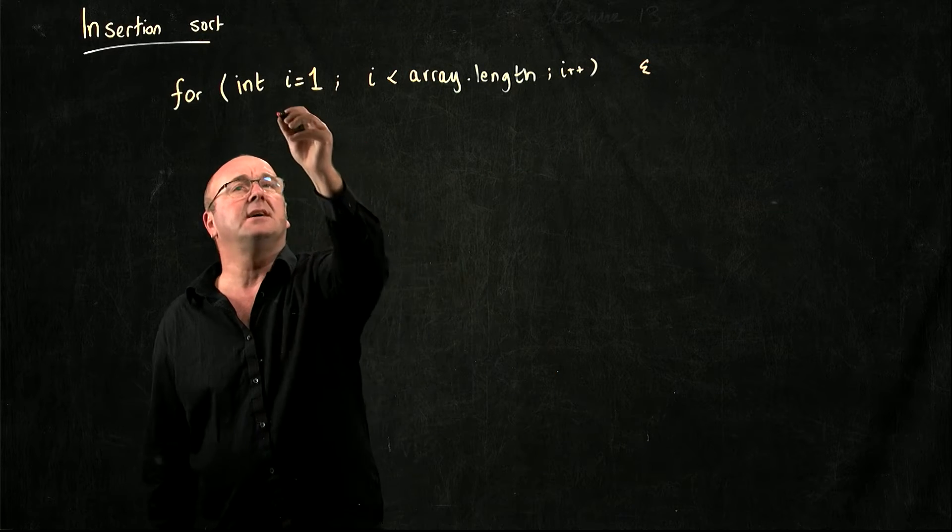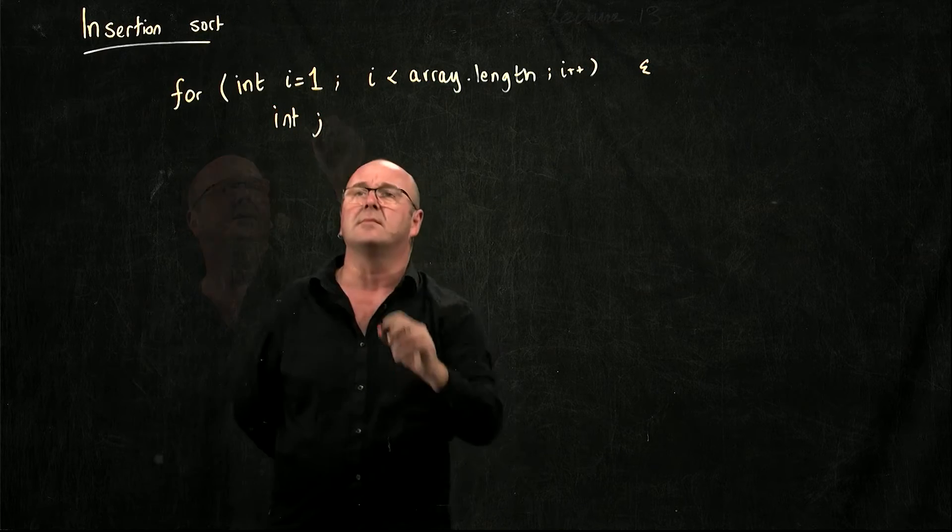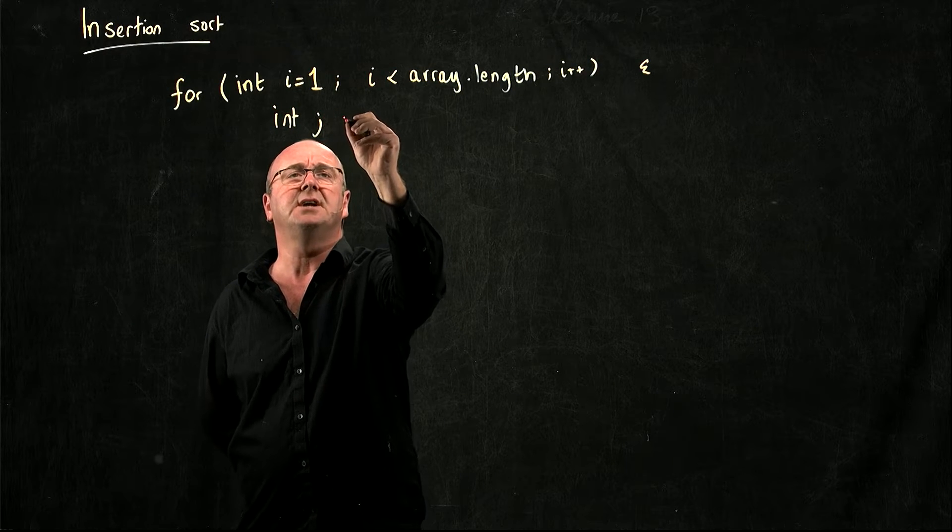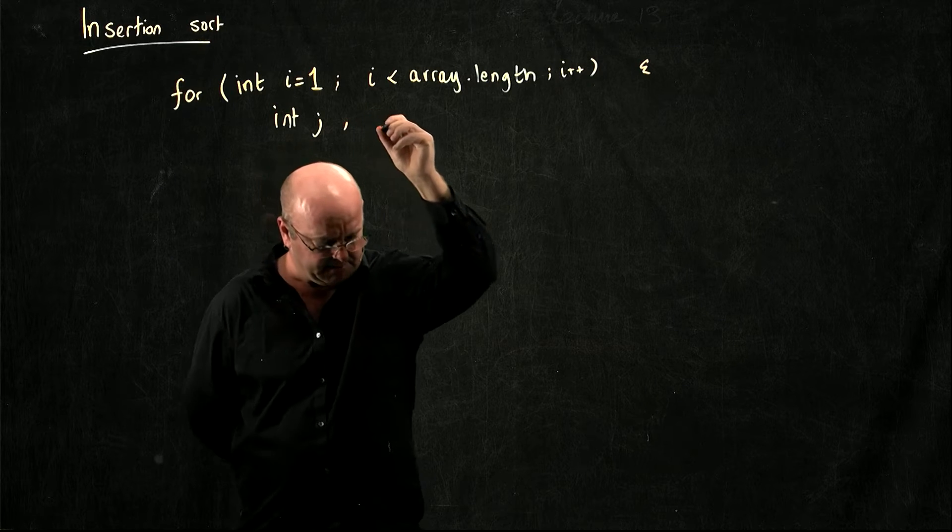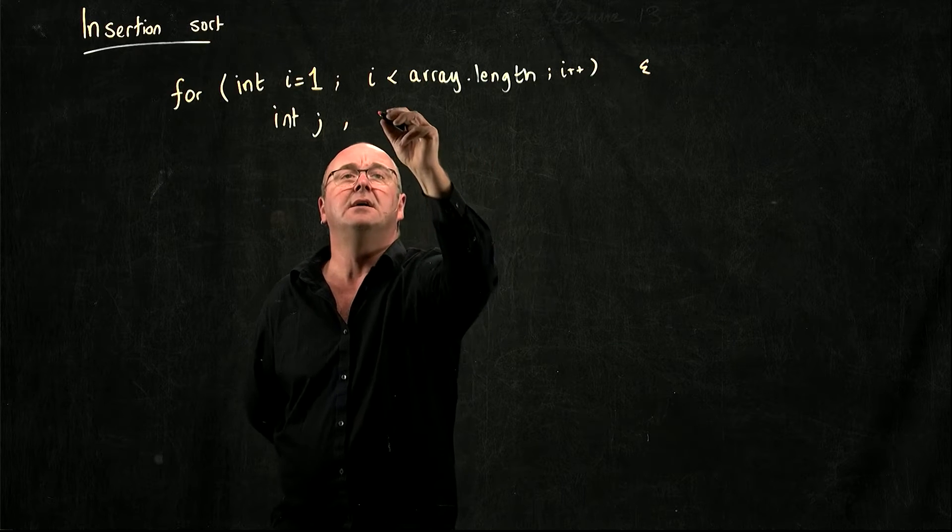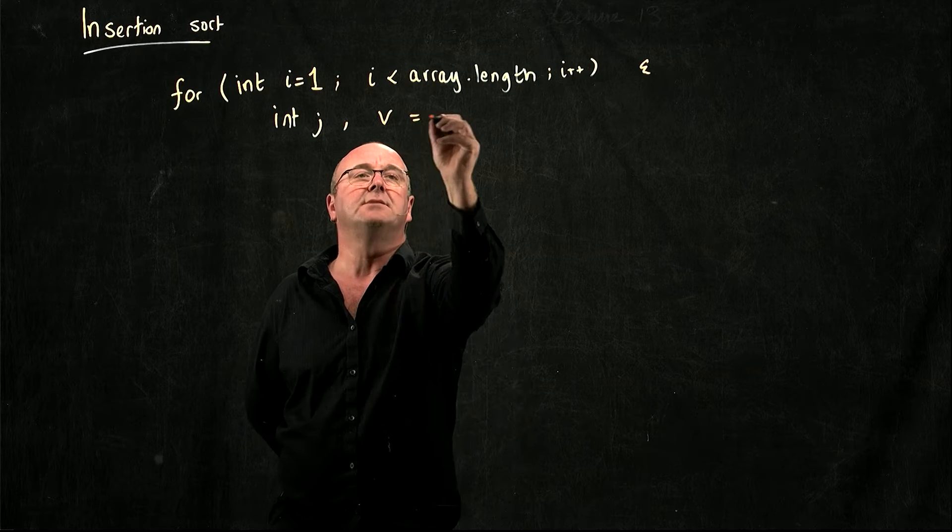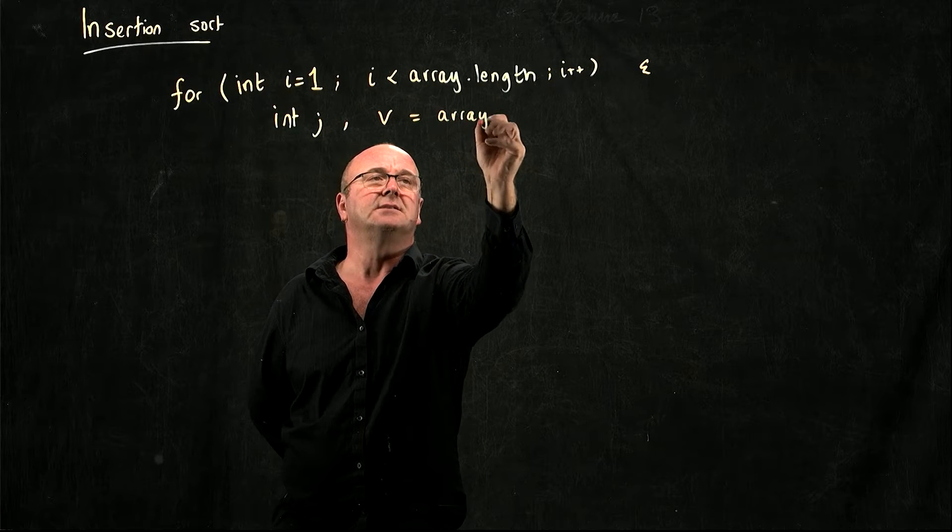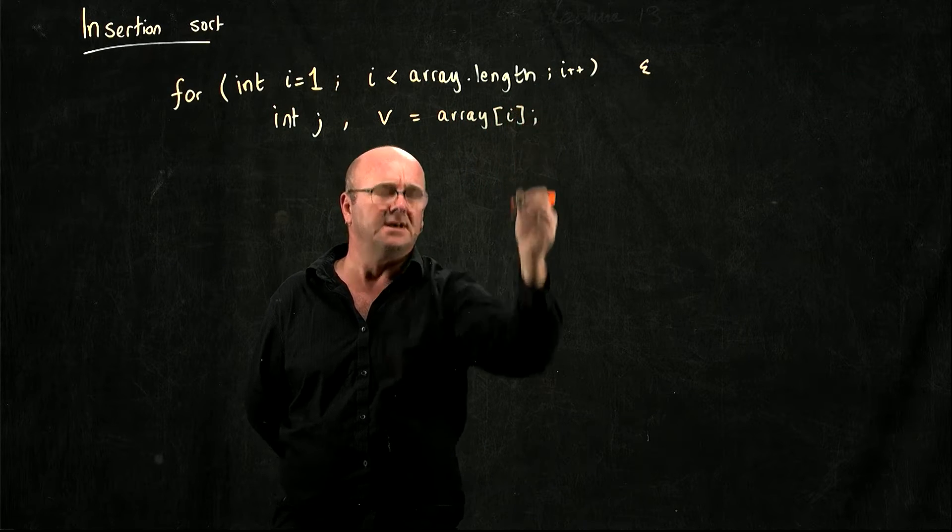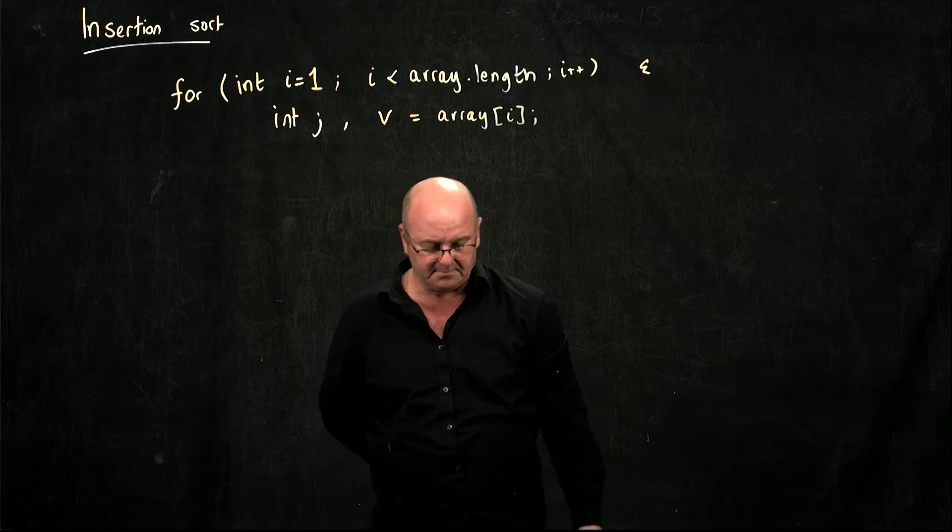I'm going to have another integer j, and another integer v, which I'm going to call array[i], just to make things easy. It's the array element at position i.